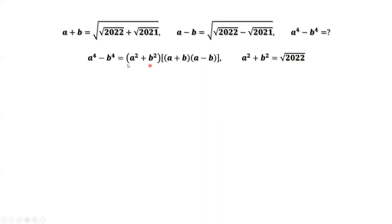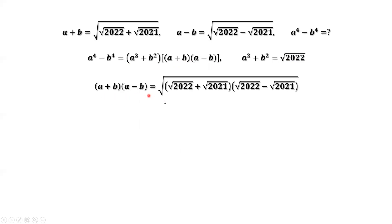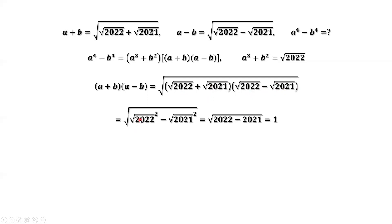We have the result for the first factor. Now we need to find A plus B times A minus B. A plus B times A minus B equals the square root of 2022 plus the square root of 2021, times the square root of 2022 minus the square root of 2021. This is in the form A plus B times A minus B, so the result equals A squared minus B squared, which is 2022 minus 2021, equal to 1.